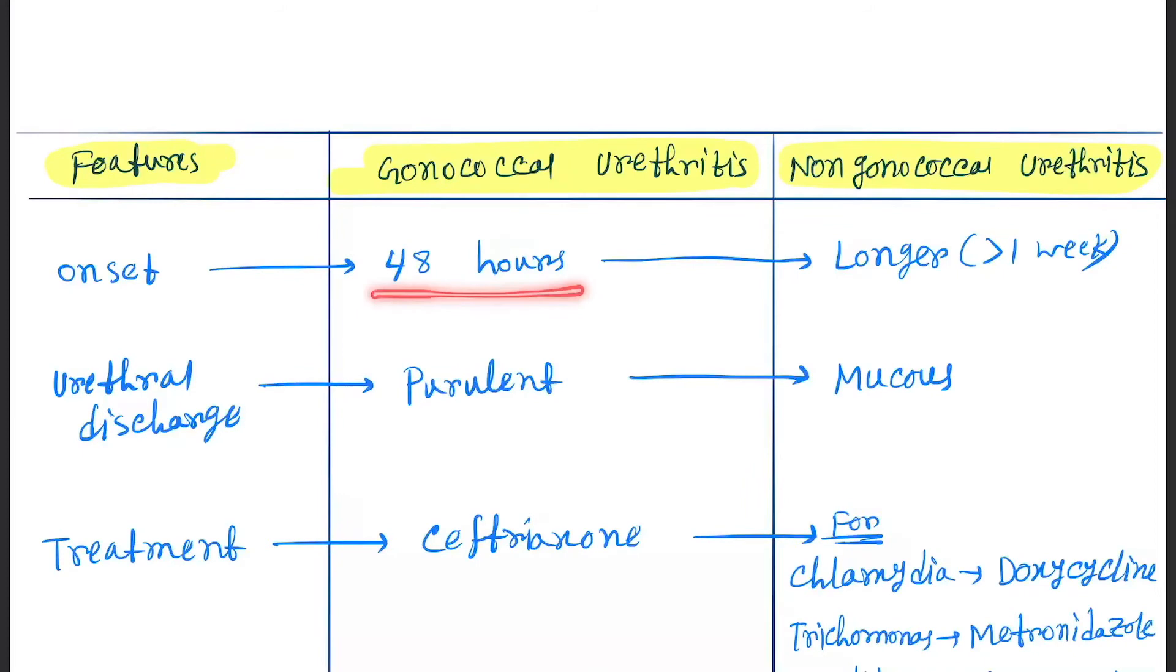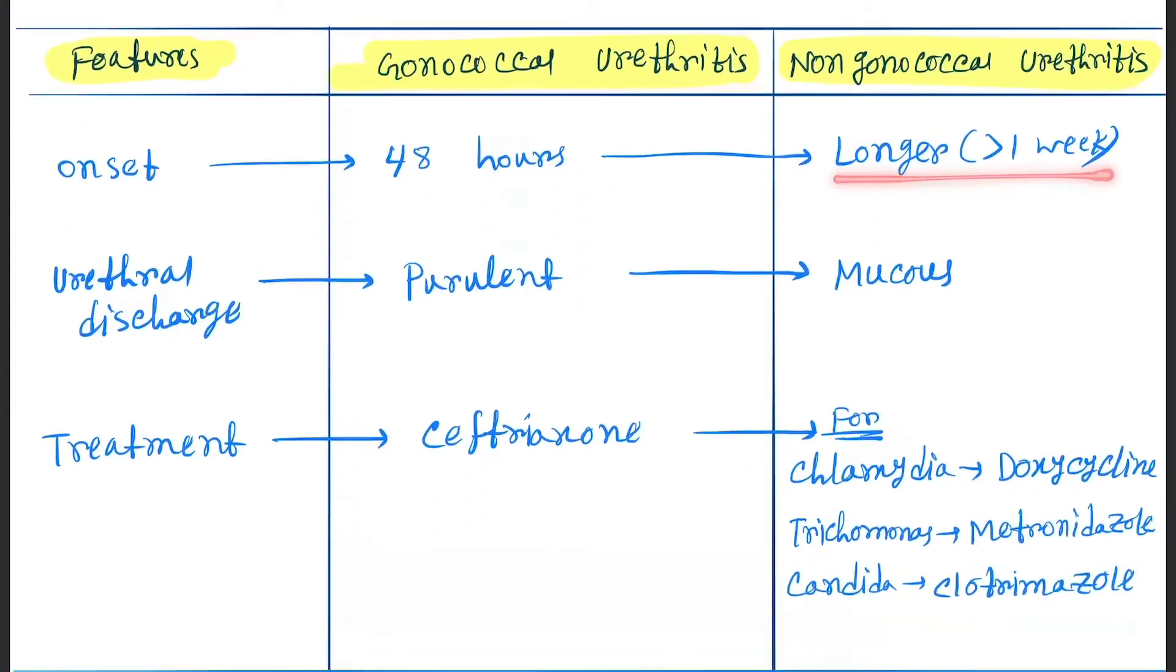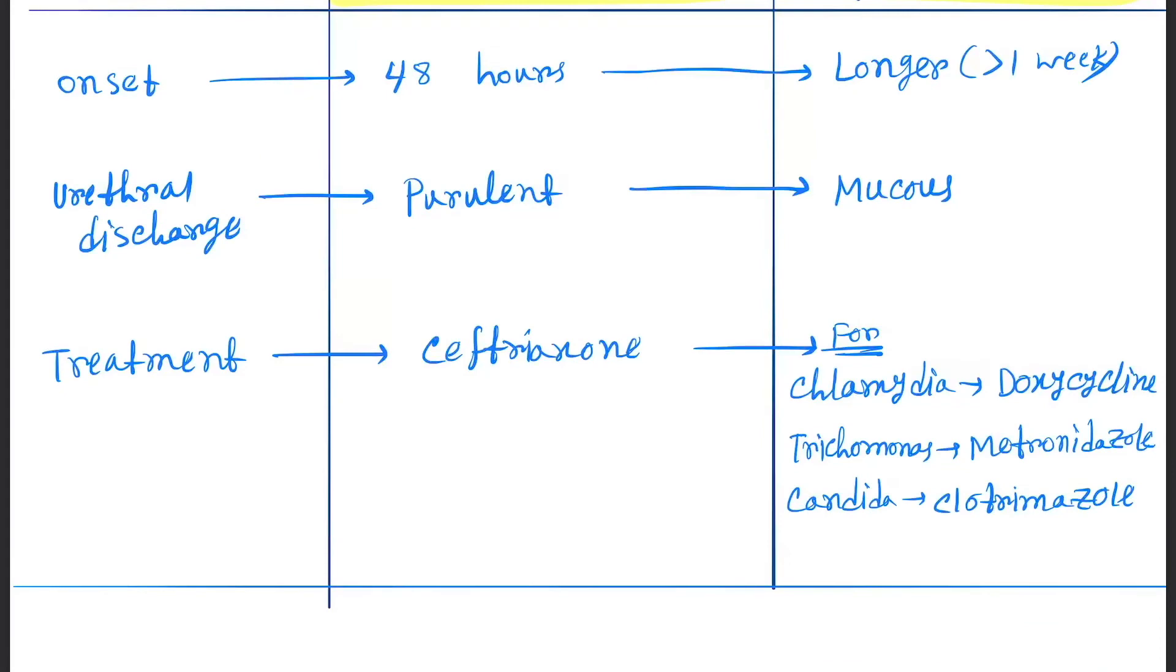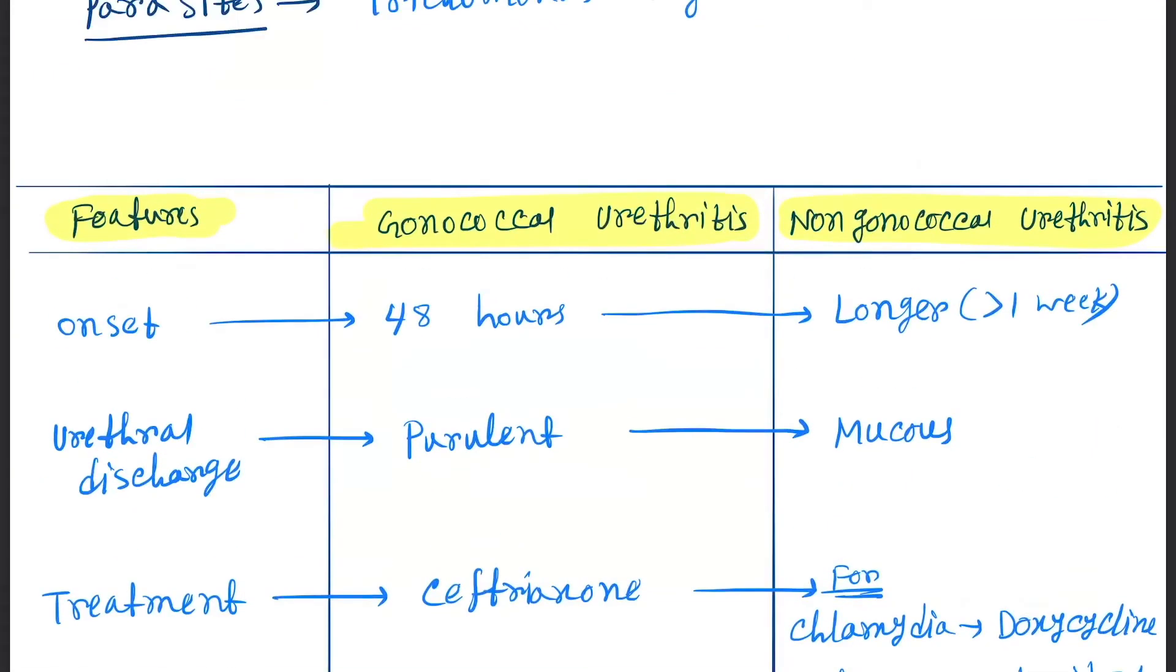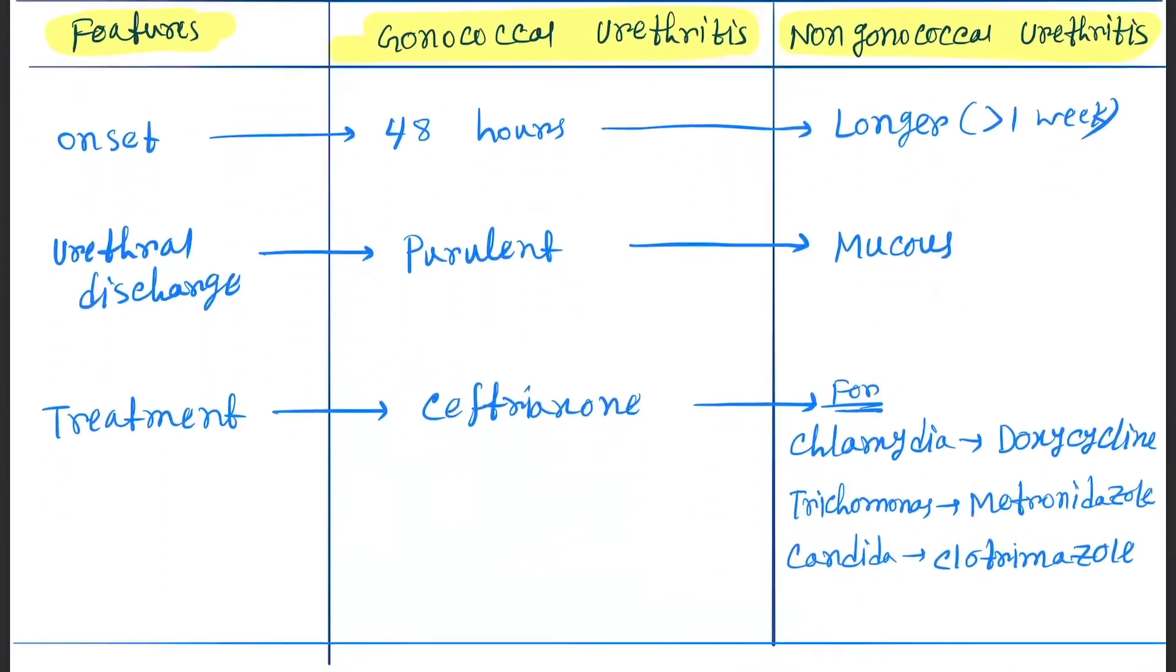Gonococcal urethritis: 48 hours. Non-gonococcal: longer, greater than one week. Urethral discharge type in gonococcal is purulent, and here it is mucus.